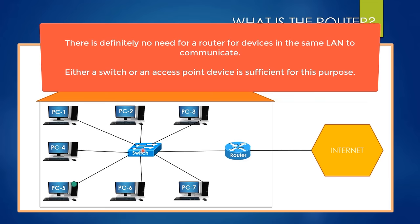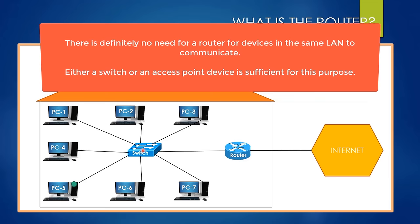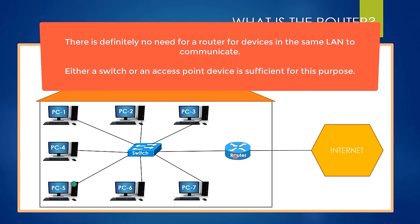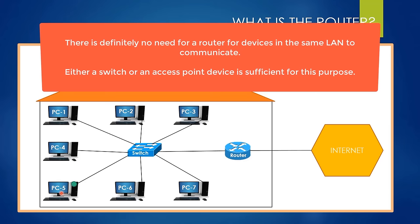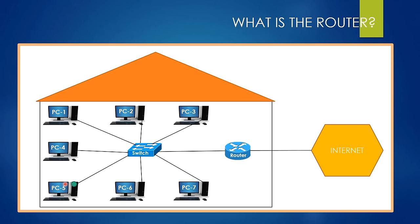Always remember: a switch device is enough for communication of devices in the same LAN. A router has no role in the communication of different devices in the same LAN like PC one and PC five. What if PC one wants to communicate with the internet — what will happen if PC one wants to send a packet to the internet? If a computer can send packets to the internet, this means that this computer communicates with the internet.